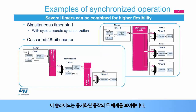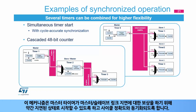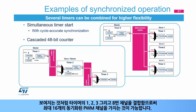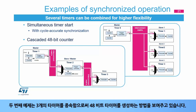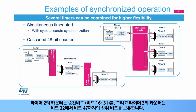Two examples of synchronized operation are given. The first shows how four timers can be simultaneously started; a mechanism allows the master timer to start slightly delayed to compensate for the master-slave link delay and have all timers synchronized with cycle accuracy. By combining the channels of timers 1, 2, 3, and 8, it is possible to have up to 16 synchronized PWM channels. The second example shows how to create a 48-bit timer by cascading three timers, where the update event on counter rollover is used as the input clock for the following slave timer: timer 1 holds the least significant 16 bits, timer 2 holds bits 16 to 31, and timer 3 holds bits 32 to 47.